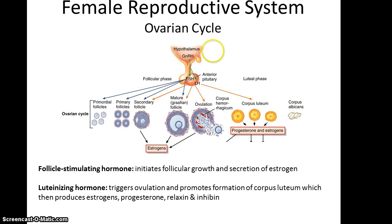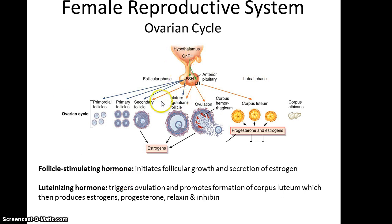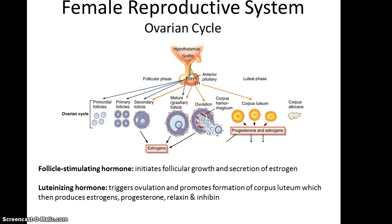In the early stages of the ovarian cycle, when primordial follicles are being stimulated to form primary follicles, this is controlled by follicle-stimulating hormone — it stimulates the formation of the more mature follicle. This also leads to the secretion of estrogen in the ovary. Near the end of the follicle's development, luteinizing hormone is produced in the anterior pituitary, triggering the actual ovulation event and promoting formation of the corpus luteum, which produces estrogens, progesterone, relaxin, and inhibin.